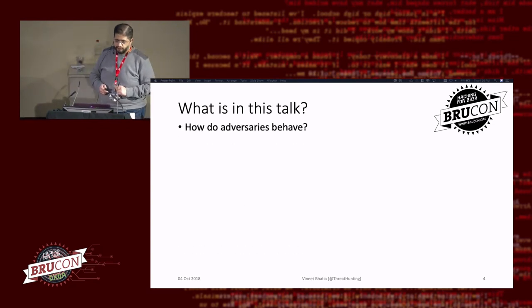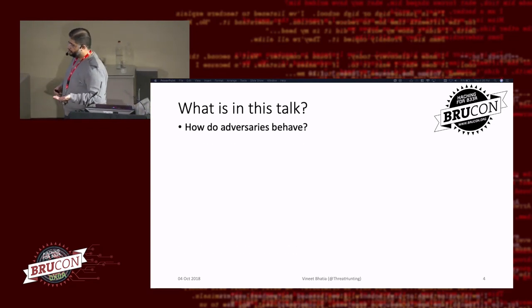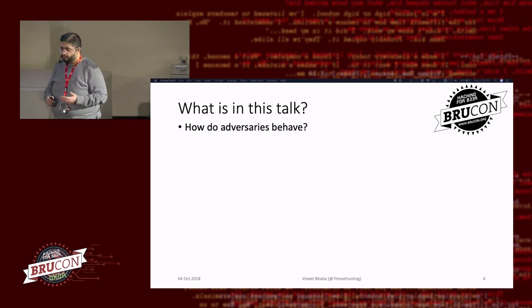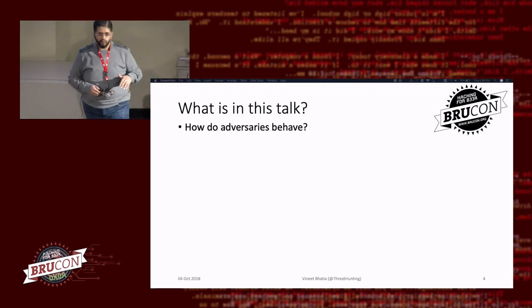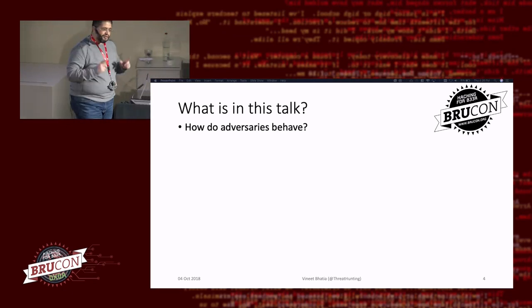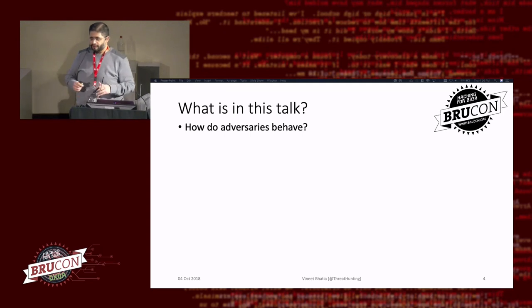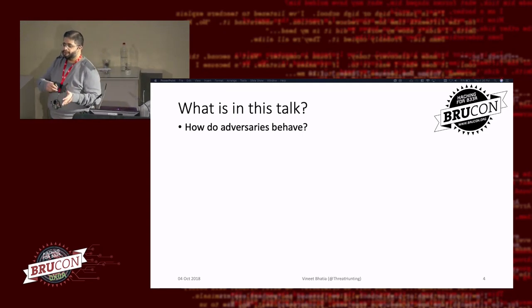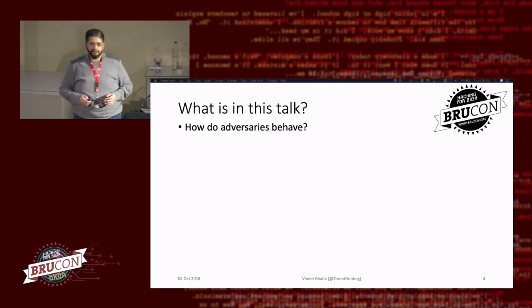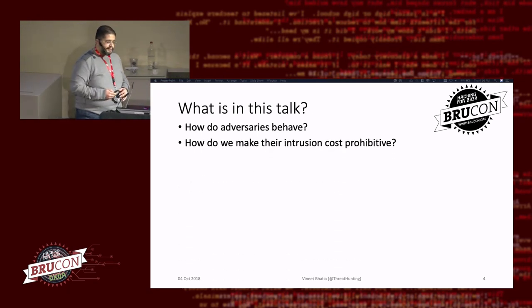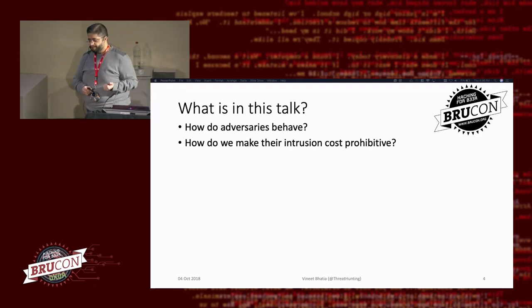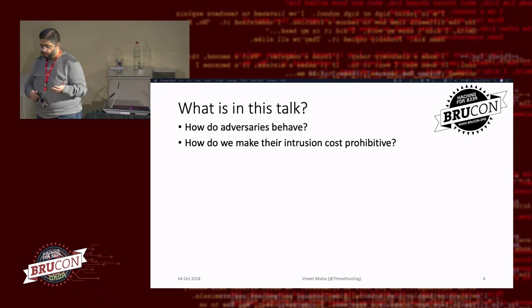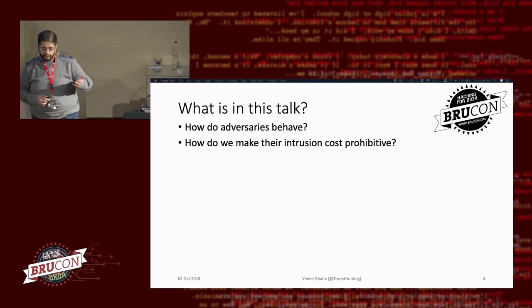What is in this talk? How do adversaries behave? My day job is defense primarily. I look at how adversaries behave on the network, how red teamers behave on the network. I'll talk from my experience of what I've seen red teamers do on networks, what attackers do, and then some of the nation-states. The next item is how do you make their intrusion cost-prohibitive — this is the value of the information that Haroon spoke about.